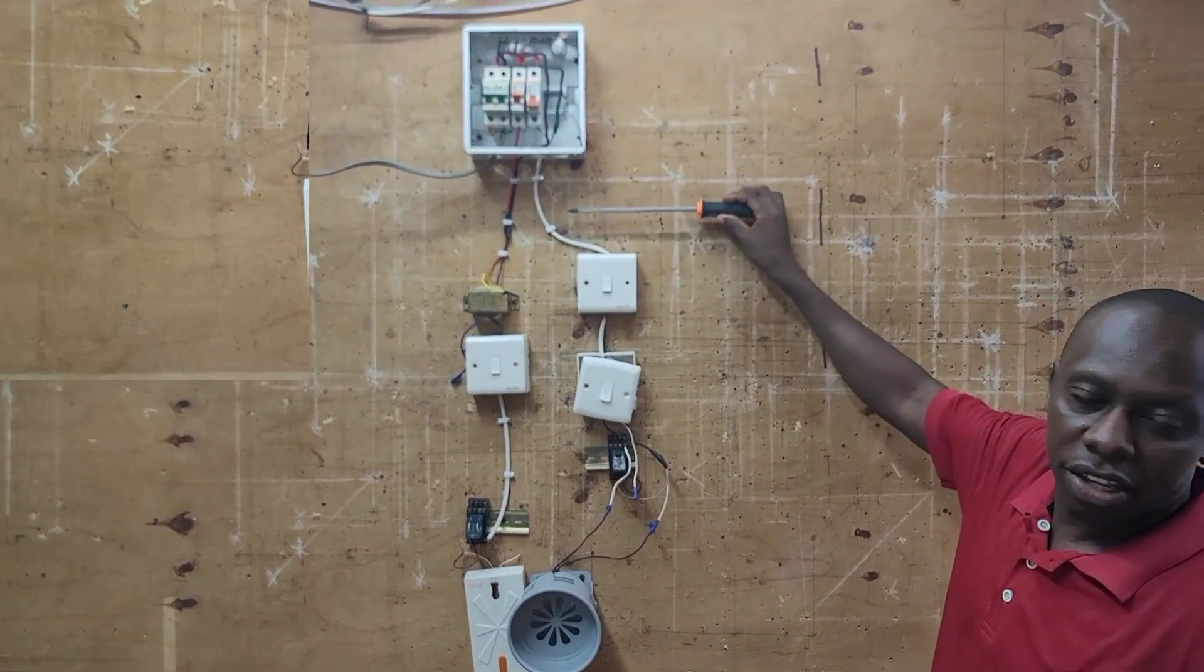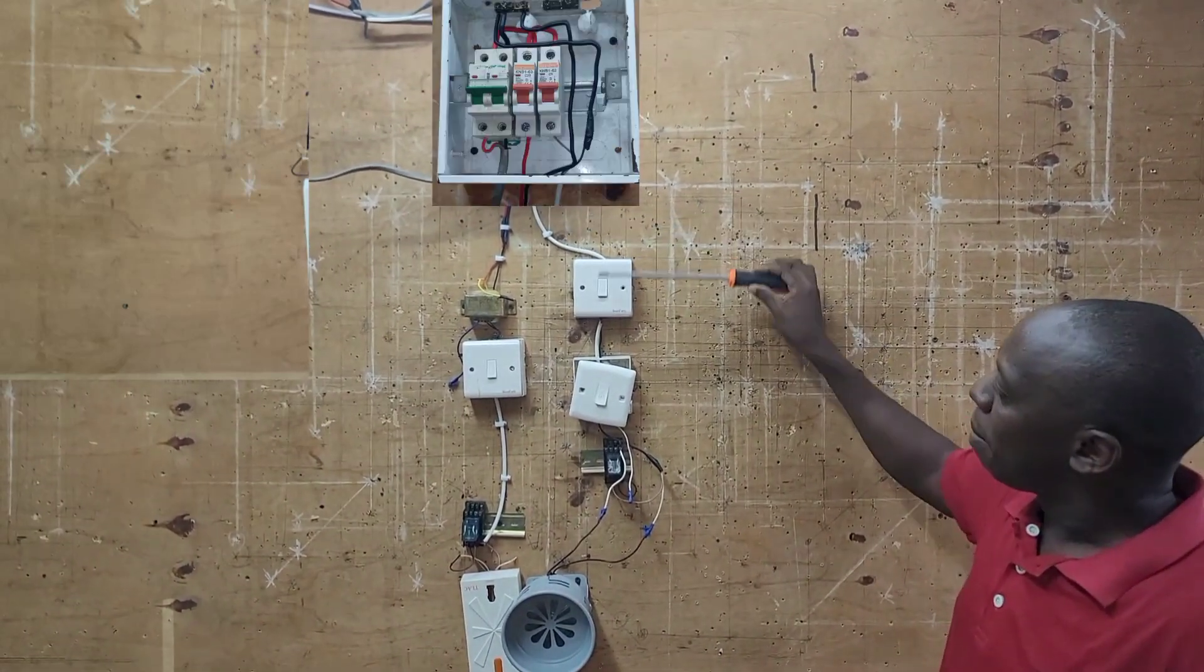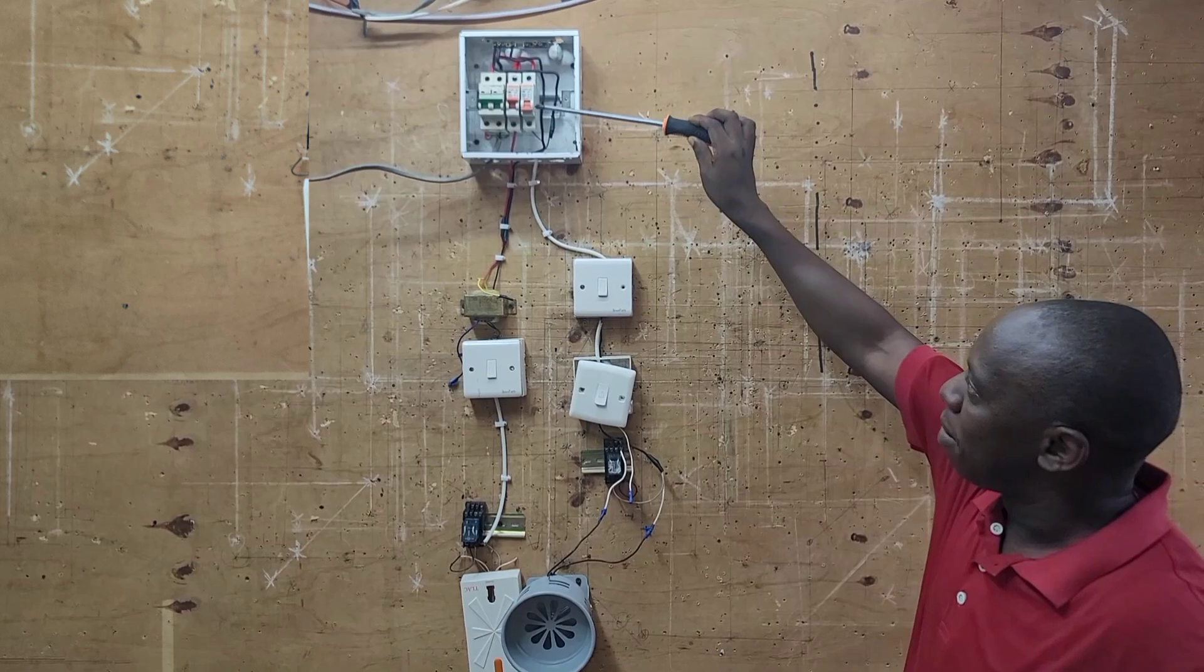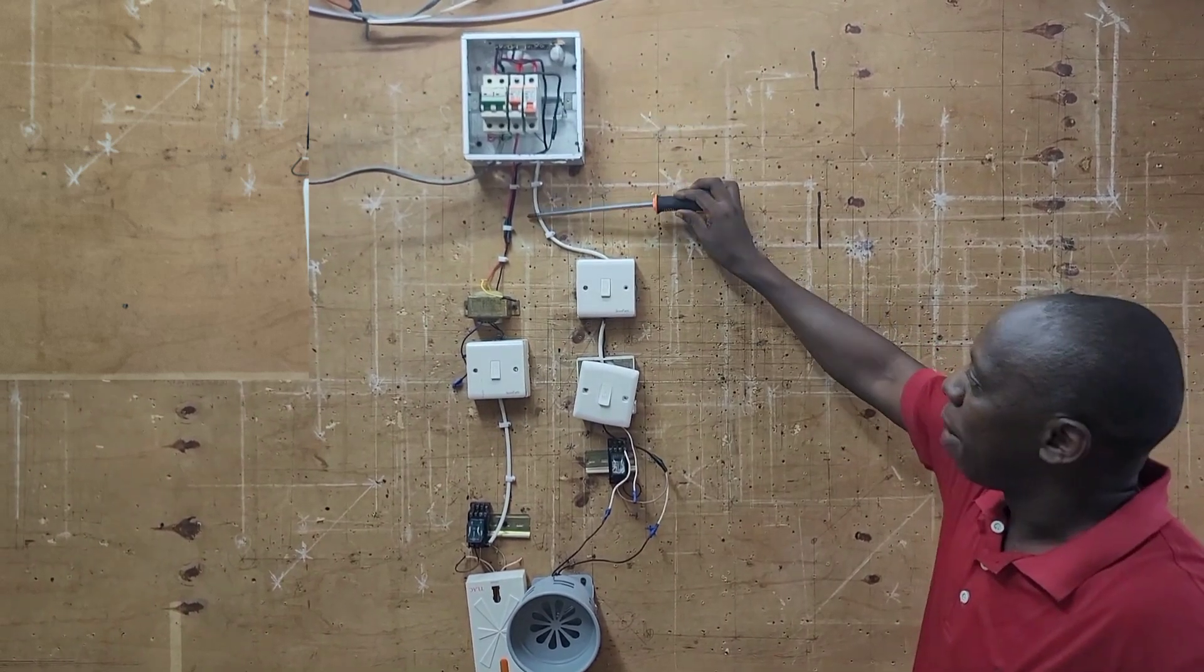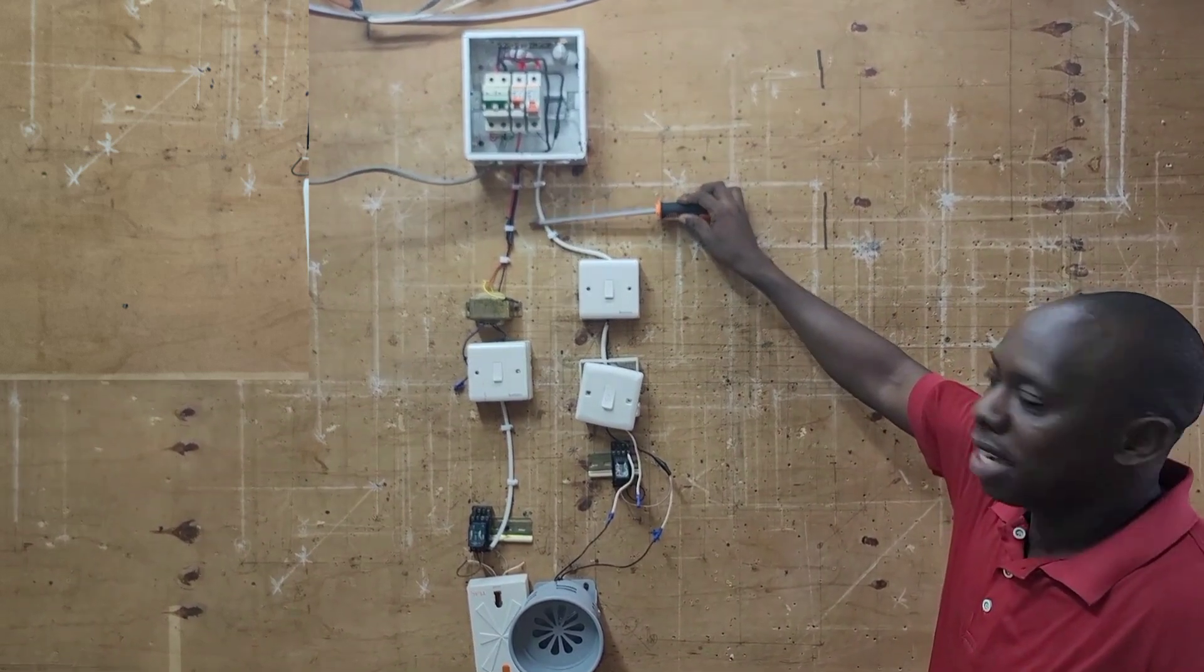This is the bell and siren circuit. To power the bell and siren circuit, we use an MCB of 3 Ampere and a cable of 0.75 mm².